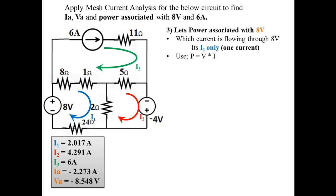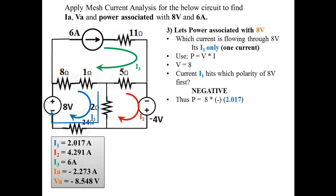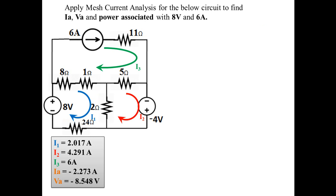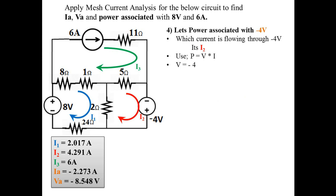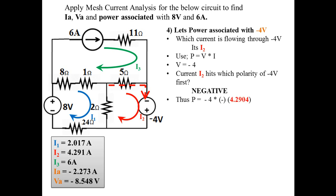Power associated with the 8V source: only I1 flows through it. Using P = V×I, and since I1 hits the negative polarity of 8V first, P = 8×(-I1) = 8×(-2.017) = -16.136 W. Negative power indicates the 8V source is acting as an active element (discharging). Power associated with the -4V source: only I2 flows through it, hitting the negative polarity first, so P = (-4)×(-I2) = (-4)×(-4.2904) = 17.162 W. Positive power means it is acting as a load.